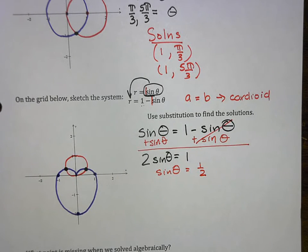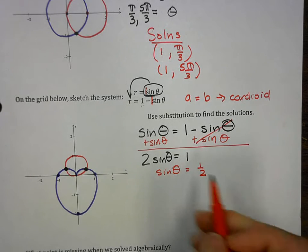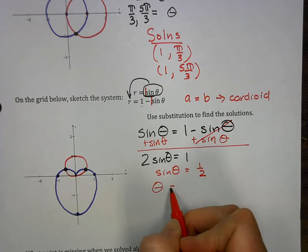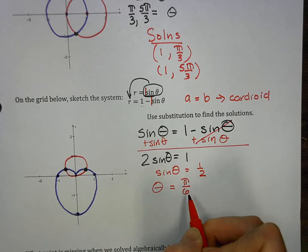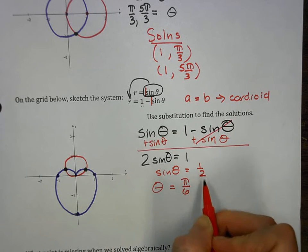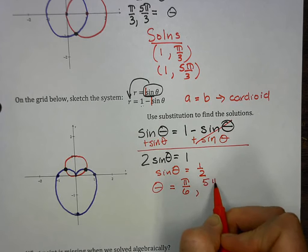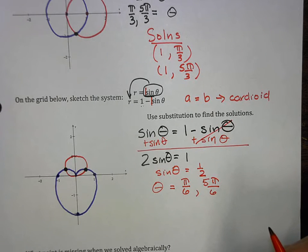So that cancels. I'm left with one equals one sine theta and one sine theta is two sine theta. I can divide by two and I can get the sine of theta equals one half. I'm in familiar territory. If sine of theta is one half, theta equals, where is the sine one half? That's pi over six. Where else is the sine positive one half? That would be five pi over six. So there's my theta.